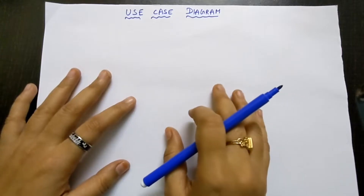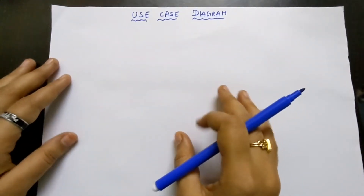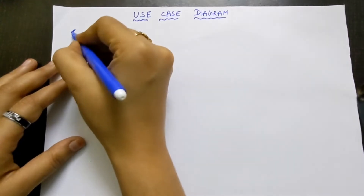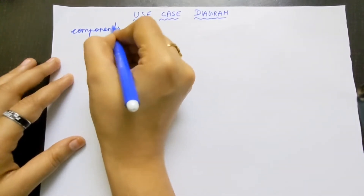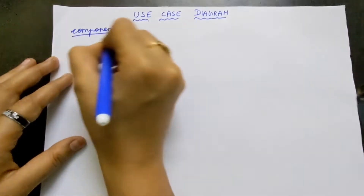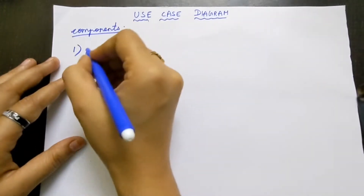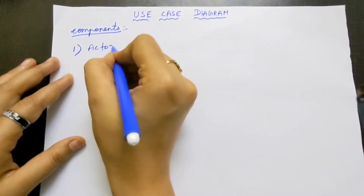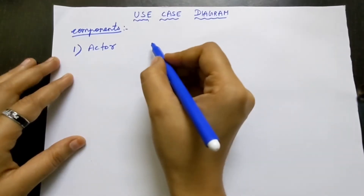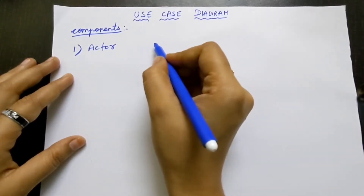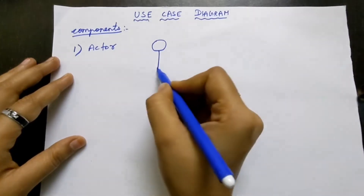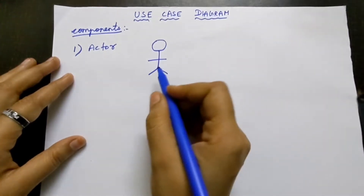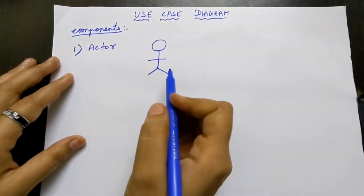First let us look into the components — symbols, which are the building blocks. The first component is actor. We will represent the actor in a use case diagram like this.